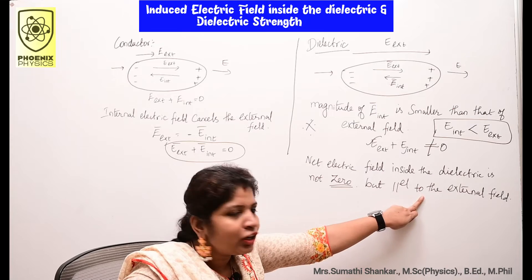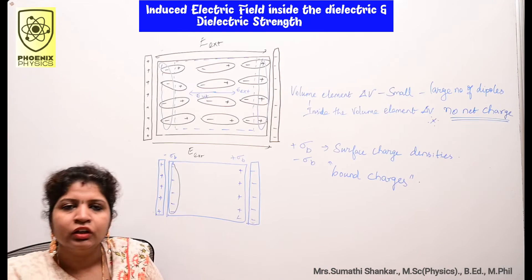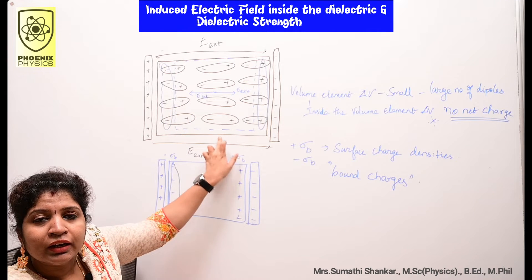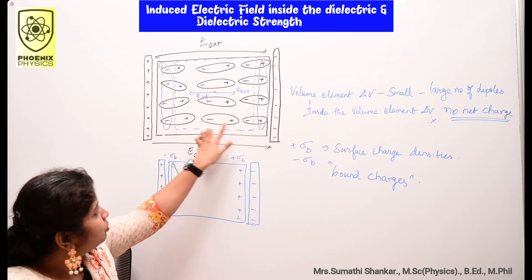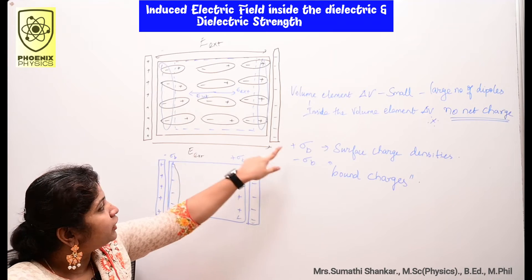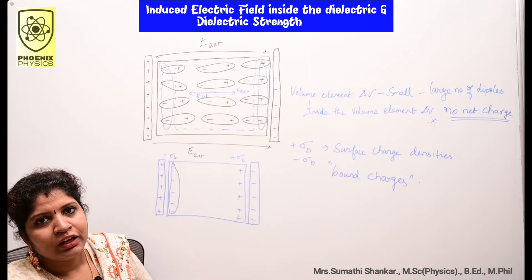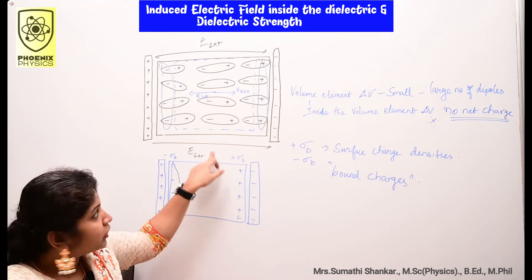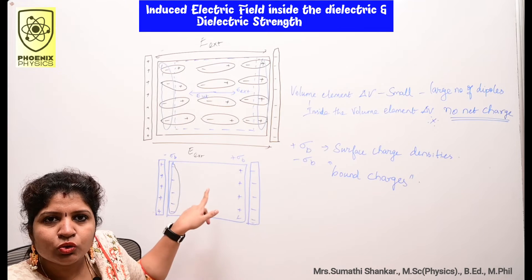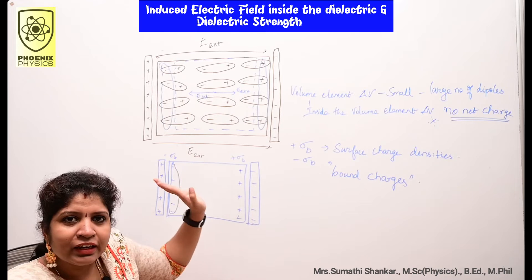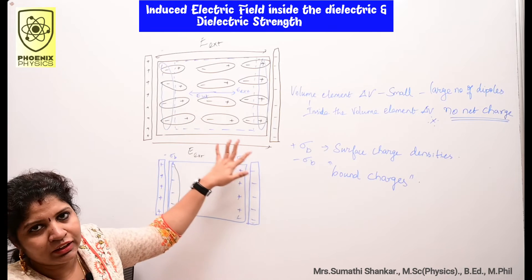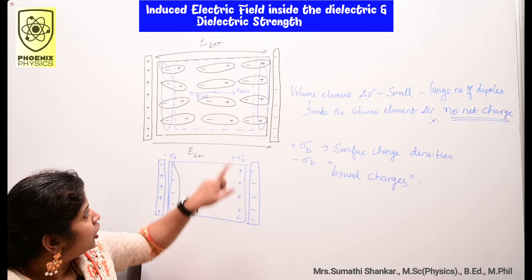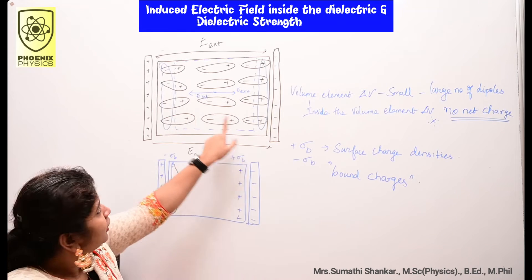For example, consider a rectangular dielectric slab placed between oppositely charged plates. A uniform electric field E external acts between the plates. The external electric field realigns the molecules inside the dielectric — the dielectric is said to be polarized.